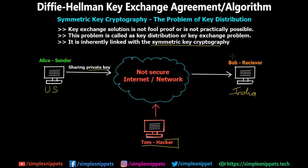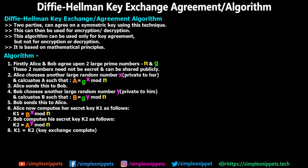This is where the Diffie-Hellman key exchange algorithm works. In the Diffie-Hellman key exchange, two parties can agree on a symmetric key using this technique. It can then be used for encryption and decryption. However, this algorithm is only used for key agreement or exchange — it is not itself used for encryption or decryption. It is based on mathematical principles which we'll see in a moment.